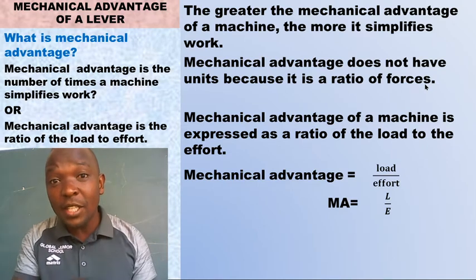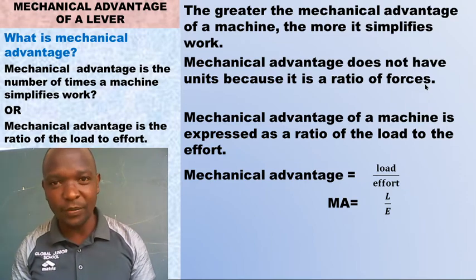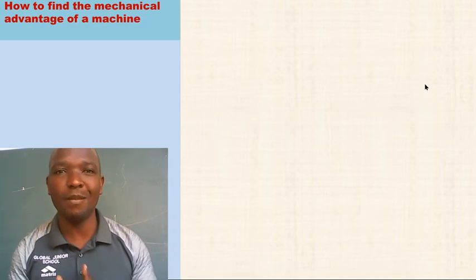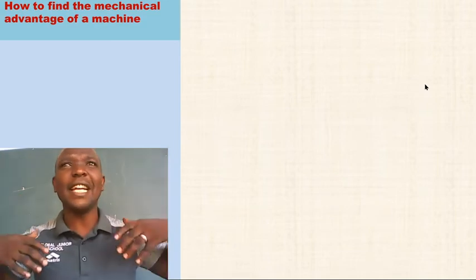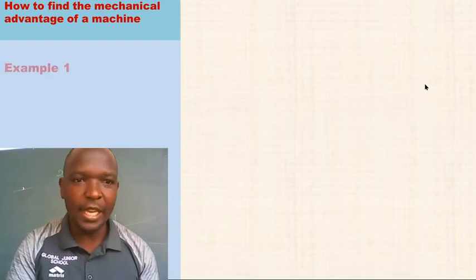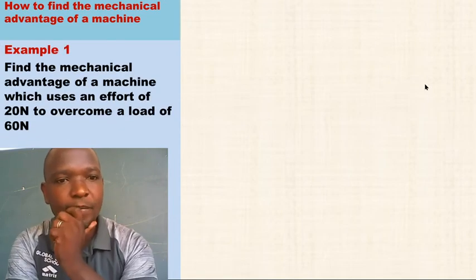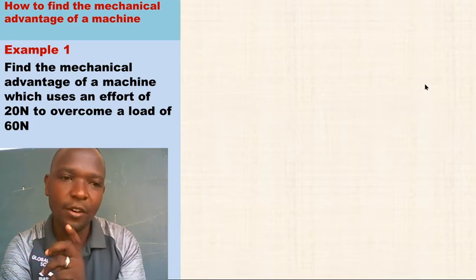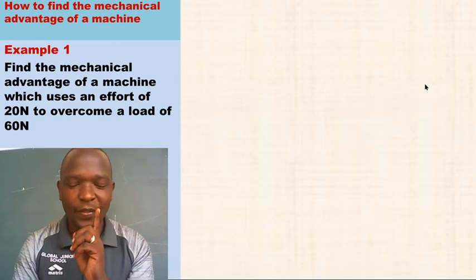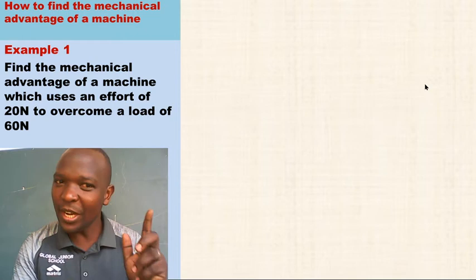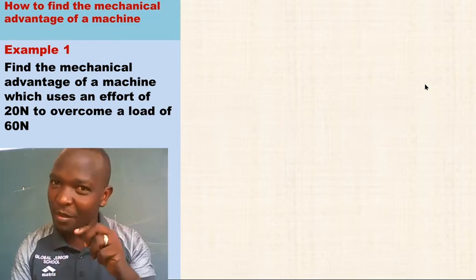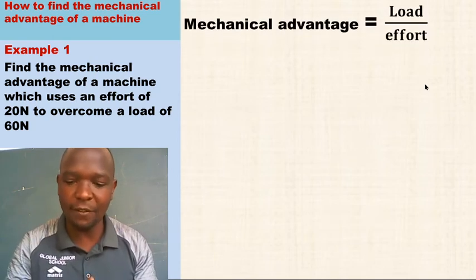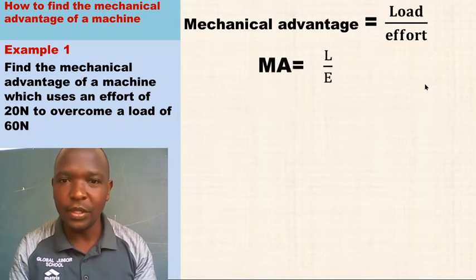When you divide the load by the effort, you get the mechanical advantage, MA. Now I want to see some examples of how to find the mechanical advantage of a machine. Example one: Find the mechanical advantage of a machine which uses an effort of 20 newtons to overcome a load of 60 newtons. They want us to find the mechanical advantage, so our formula is: MA equals load divided by effort.